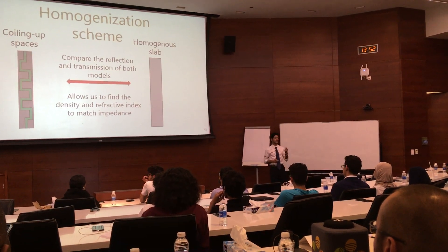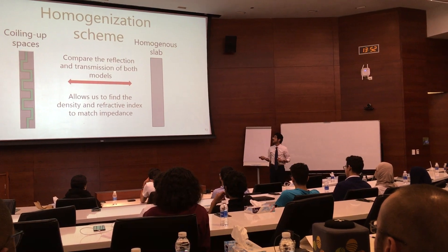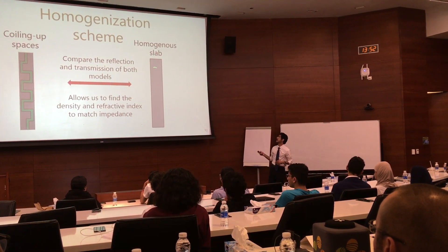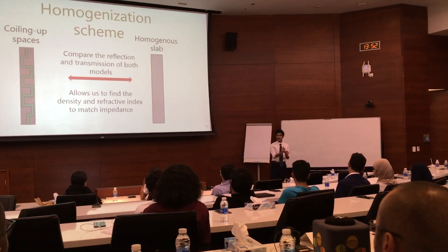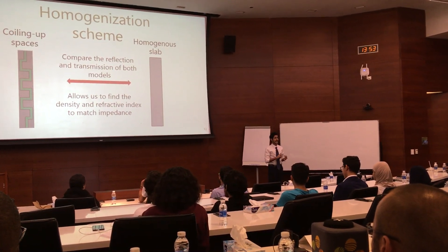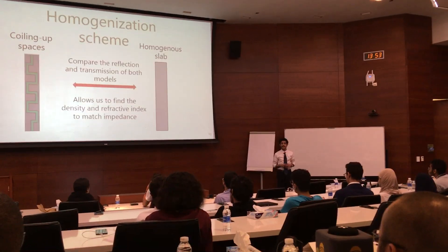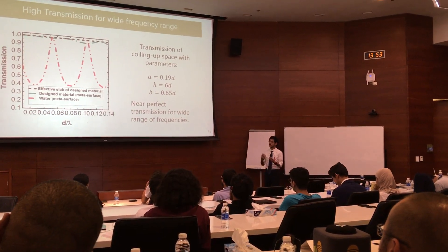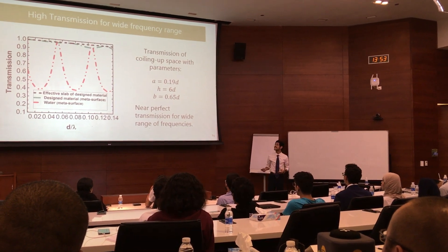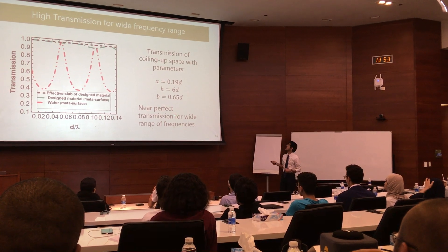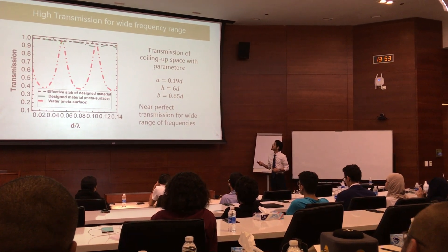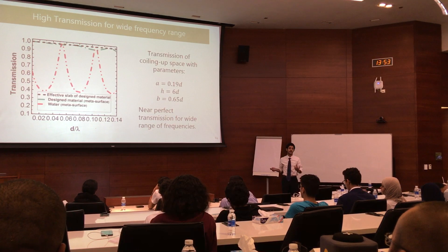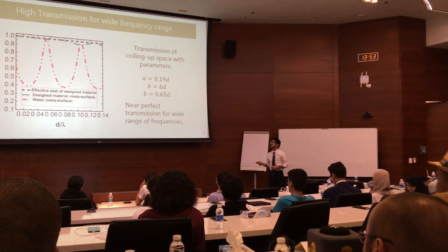To understand that, we employ something called the homogenization scheme. We analyze the pressure fields for the Coining Up Space, we analyze the transmission, and we do the same thing for a simple homogeneous slab. Comparing the results from both models, we can understand exactly what refractive index and density of the filling material we need, such that the overall impedance of the Coining Up Space is matched to that of the background. If we have impedance matching, we expect perfect transmission. This is indeed what we find when we simulate numerically a Coining Up Space with the given parameters. Looking at the green line, even for a range of frequencies, we see almost 100% transmission throughout. This is in contrast to water-filled slits, which have very inconsistent transmission, going as low as 40%.